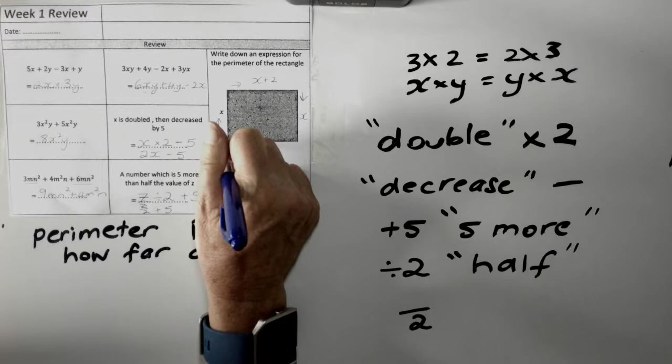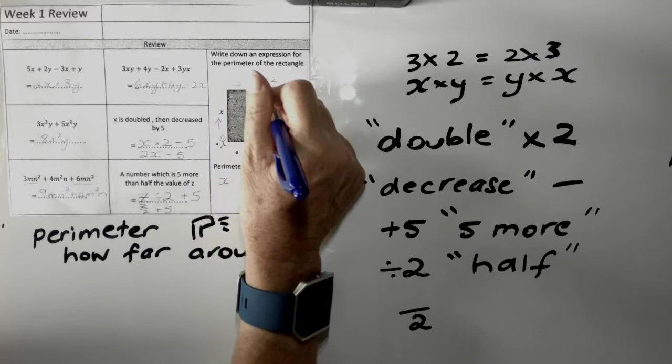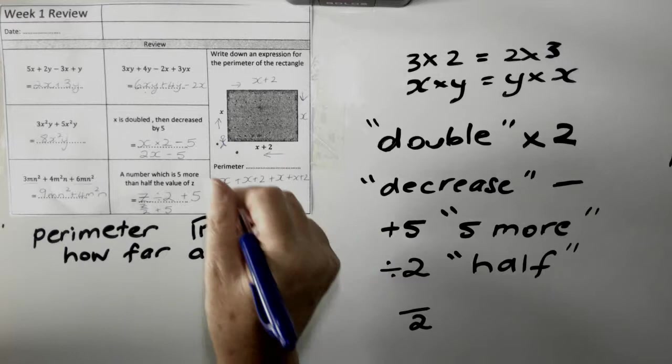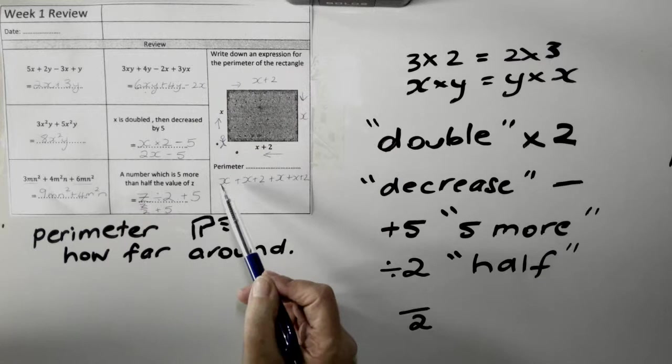I'm going to walk up X. And then I'm going to walk along X plus two. And then I'm walking down X. And then I'm walking along X plus two. And that's how far around I've walked.